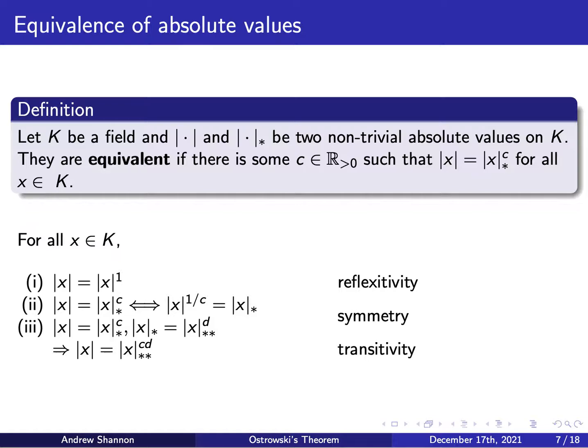Given the various examples of absolute values we just saw, it's reasonable to ask how many different absolute values over a given field there are. Ostrowski's theorem actually gives a surprising answer to this question for the field of rationals, but before we see that, we first need a way to equate absolute values to each other. Let k be a field and double bar and double bar star be two non-trivial absolute values on k. Then we say they're equivalent if there is some positive real number c such that double bar of x equals double bar star of x to the c for all x in the field. We can show this relation defines a proper equivalence relation — reflexive, symmetric, and transitive — but for the sake of time I'll skip over it; the sketch of the proof is below.